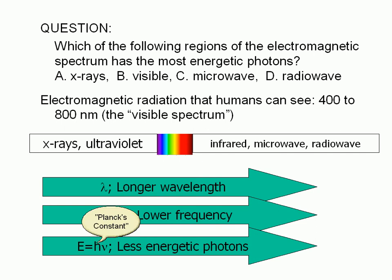This means that x-rays have the most energetic photons, and radiowaves have the least energetic photons. The correct answer is A.